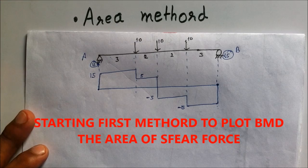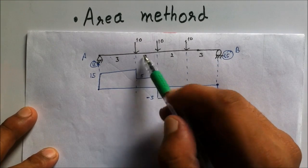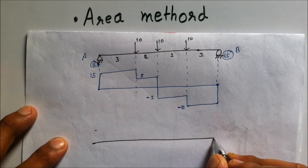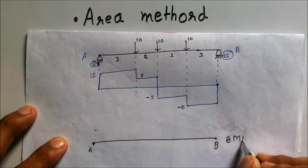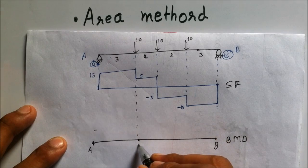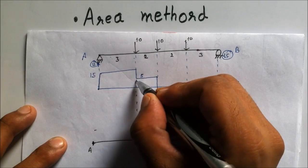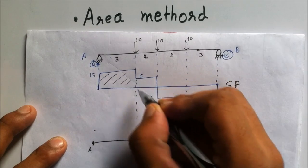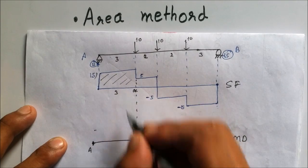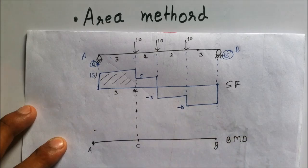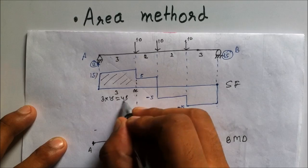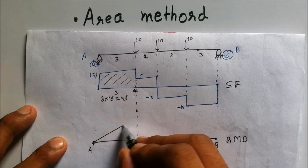The first method to compute bending moment is the area method. In this method we calculate the area under the shear force diagram and plot the bending moment. Starting from point A to the next loading point C, the area of the rectangle AC has a height of 15 and a length of 3, so the bending moment at C is 3 cross 15 equals 45 kilonewton-meter, and I draw a straight line up to 45.